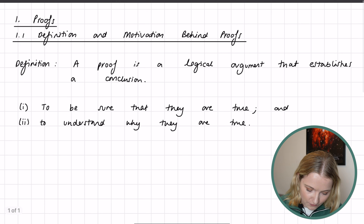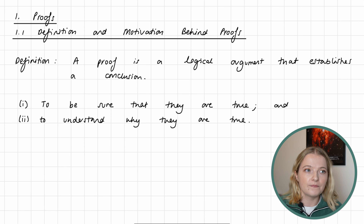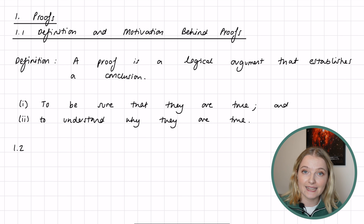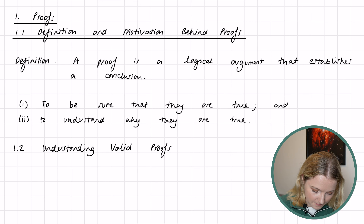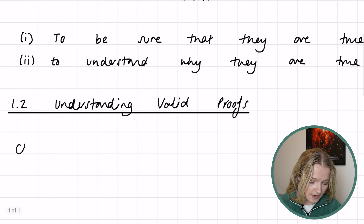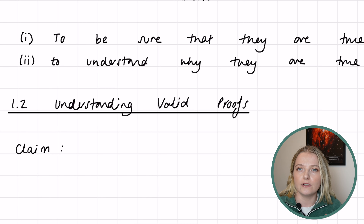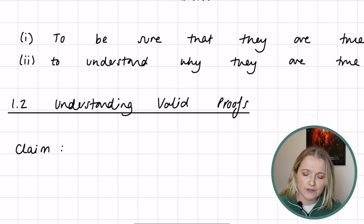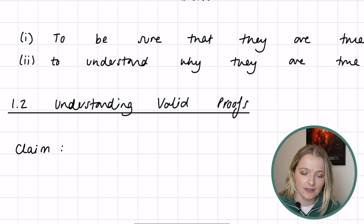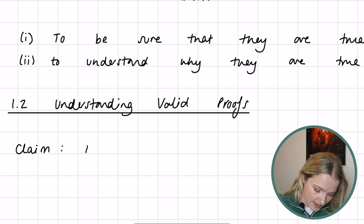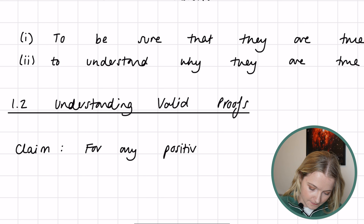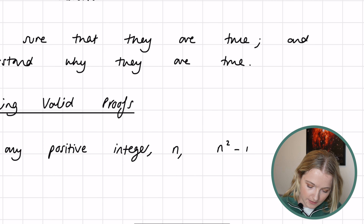We have a rough definition of a proof, but now I want to show you different examples of proofs — what might classify as a proof and what might not. We're moving to section 1.2: understanding valid proofs. We'll start with a claim, which is often how proofs are set up. Our claim is going to be: for any positive integer n, we have that n squared minus n is even.